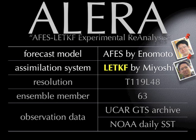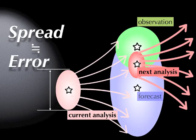LETKF is able to estimate the flow-dependent analysis error distribution. We do 63-member ensemble forecasts to perform the objective analysis and we get 63-member ensemble analysis values. We get the spread of those 63-member analysis values, which should be a reference of the error. Of course, it is going to change due to the observation number and the dynamic situation. That is the flow-dependent analysis error.